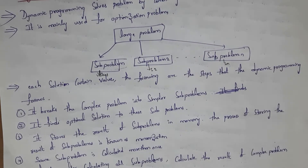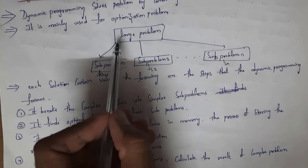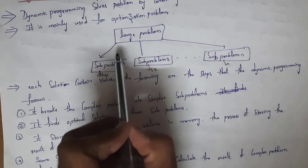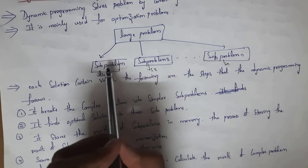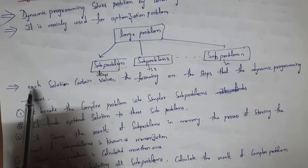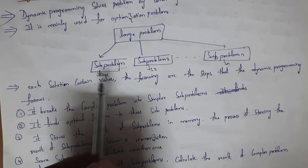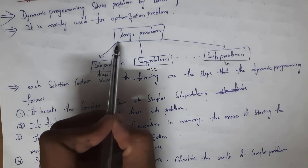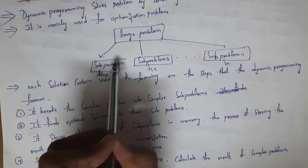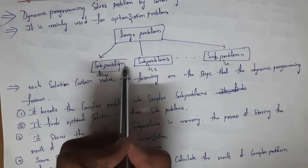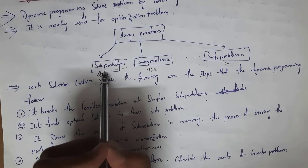Dynamic programming is mainly used for optimization problems. This is the structure of dynamic programming — the large problem is divided into smaller sub-problems. Each solution contains a value. A value is whatever solution we got for these sub-problems; we call these solutions values.